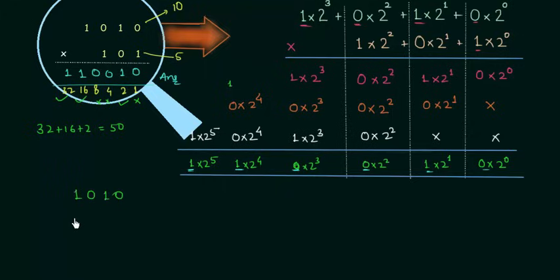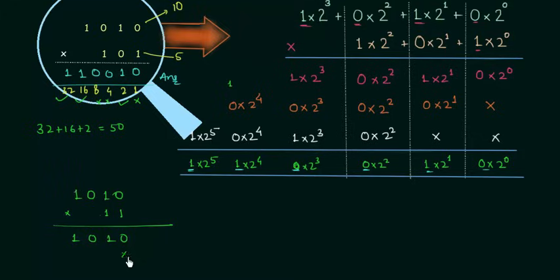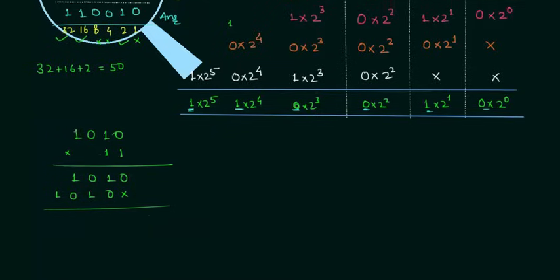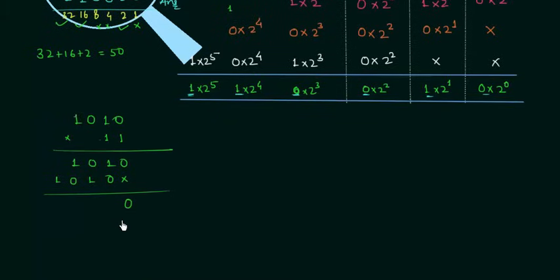The first number is 1010 and the second number is 11. Multiply 1010 by this 1 to get 1010. When you multiply 1010 by the second 1, you start from the second position, giving 1010 shifted — so we have 0, 1, 0, 1. Finally perform the addition: in the first column we have only 0; then 1; 0 plus 1 is 1; 1 plus 0 is 1; and in the last column we have 1. So this is our answer.